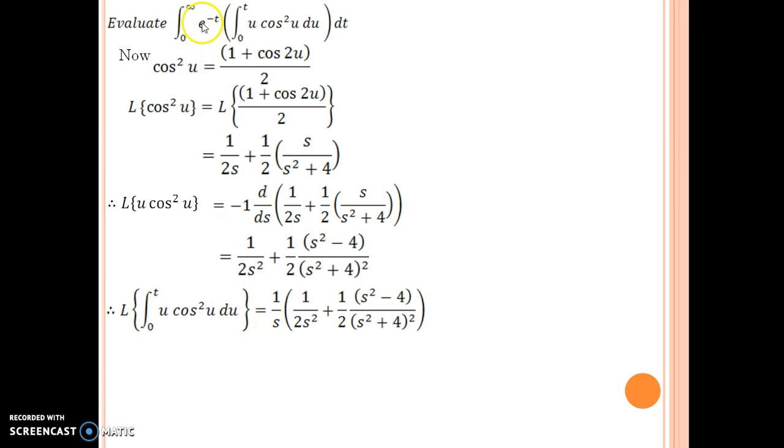Next is e to the power minus t and integral 0 to infinity. Now here you have to be careful to execute this next step. What you have to realize is, since the integral is from 0 to infinity, you have no effect right now studied under Laplace that allows you to do this kind of thing. Thus, what you can do is, if you recall the definition of Laplace transforms, it is integral 0 to infinity e to the power minus st f of t dt.